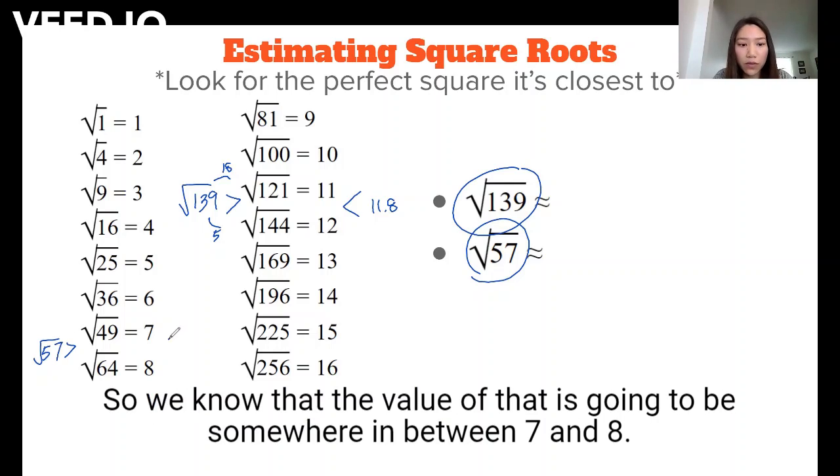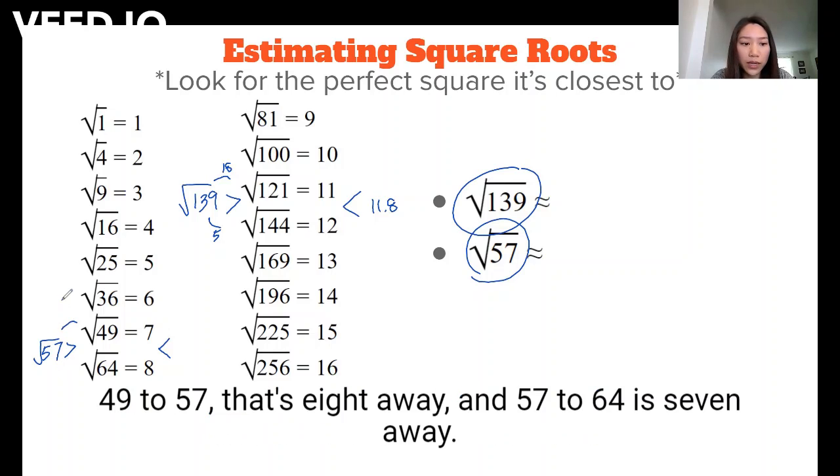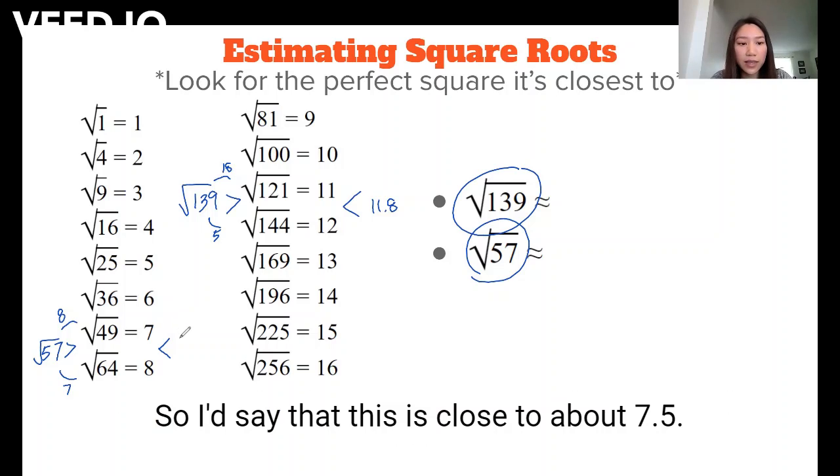And let's see what it's closer to. So 49 to 57, that's 8 away and 57 to 64 is 7 away. So I'd say that this is close to about 7.5.